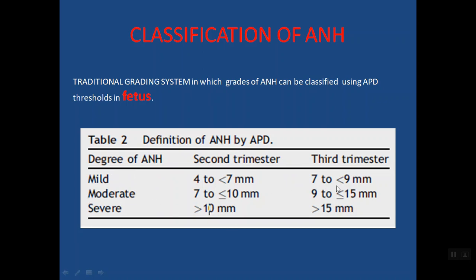In assessing ANH prenatally, we measure the anteroposterior diameter (APD) of the renal pelvis in the transverse plane. It is a surrogate marker that there is some potential disease, but it won't identify the exact pathological condition. The disadvantage is that ultrasound is subjective with intra-observer variability, and it only measures the anteroposterior diameter of the renal pelvis without considering calyceal dilatation or renal parenchymal changes such as increased echogenicity.